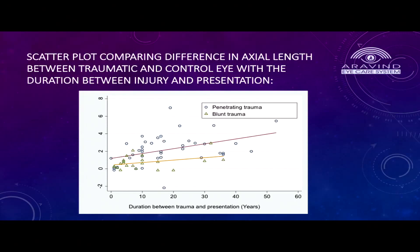The second graph shows the difference in axial length between the control eye and the traumatic eye. Again, in penetrating trauma, axial length elongation is more compared to blunt. And as age progresses, the length also increases.